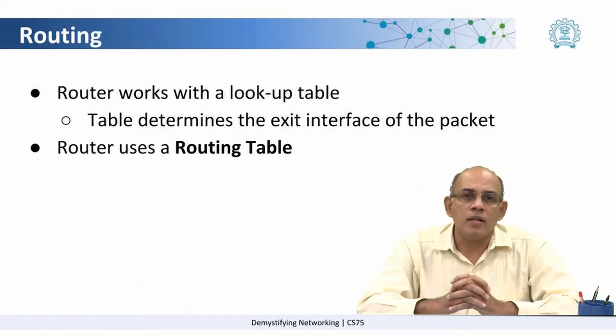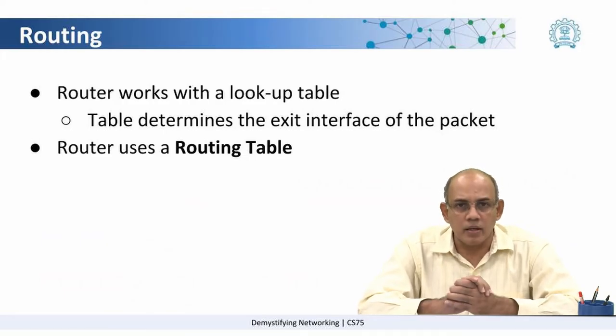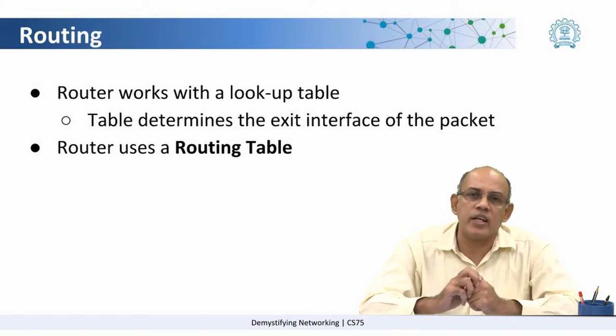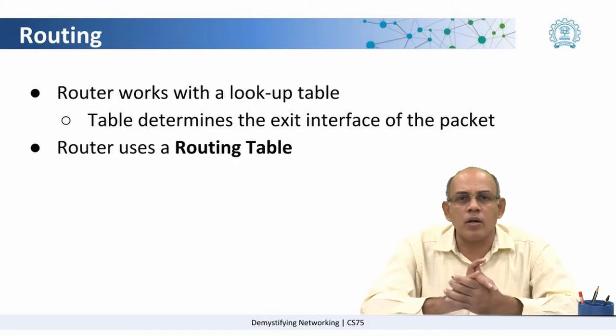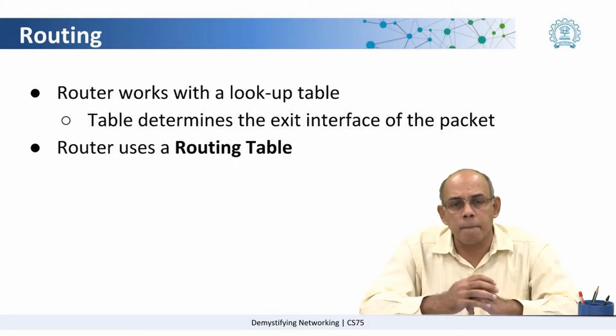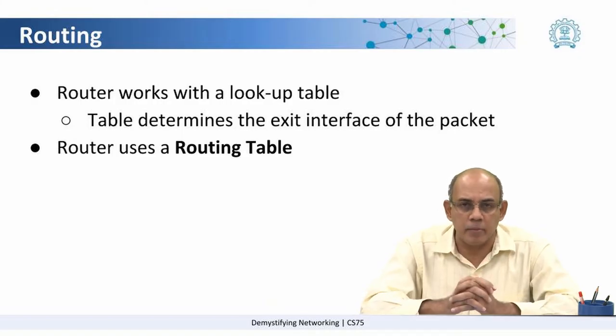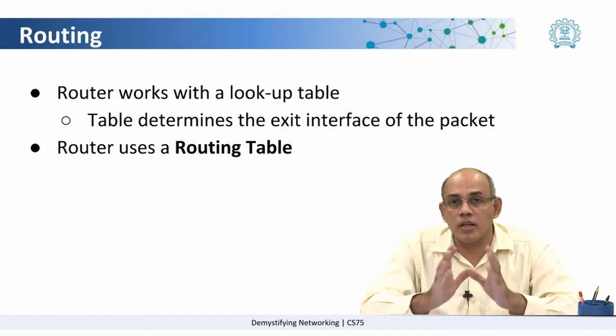Routing is the mechanism of forwarding packets from the source point on the internet to the destination point. This is done by routers. A router needs some sort of a lookup table — it needs to know that when a packet arrives on an interface, it has to be sent out on an appropriate interface. It determines this by looking up a table called a routing table.